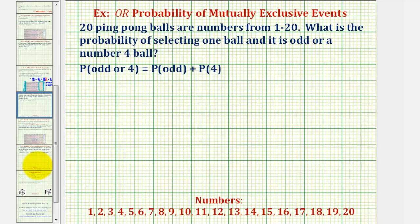Twenty ping pong balls are numbered from one to twenty. What is the probability of selecting one ball and it is odd or a number four ball?